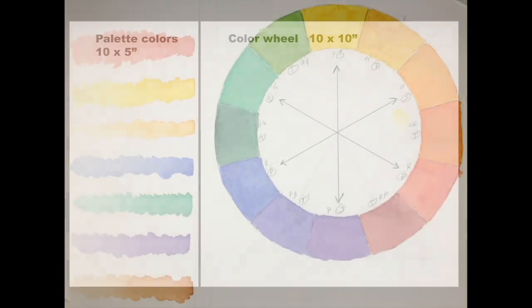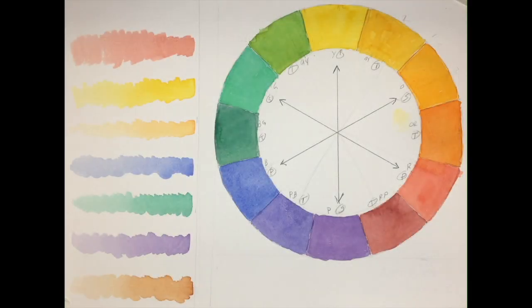Start by dividing your page into two sections. One 10 by 10 inches will be used for the color wheel. The other side will be used to lay out all of your colors from light to dark. This is what it will look like when both the color chart and the color wheel are finished. Now I'll show you how to make the first one.